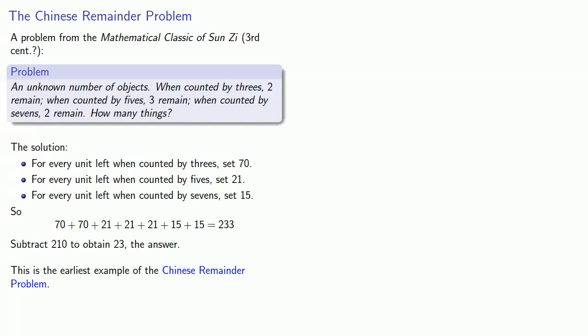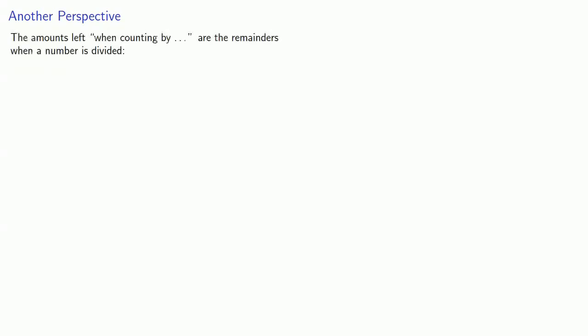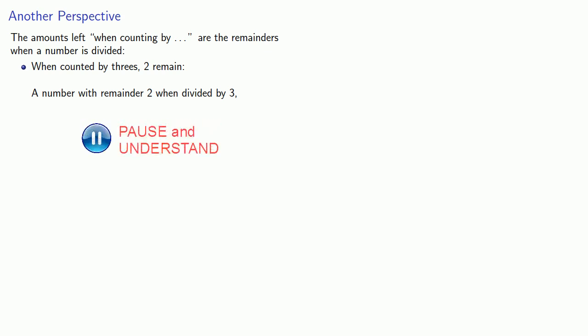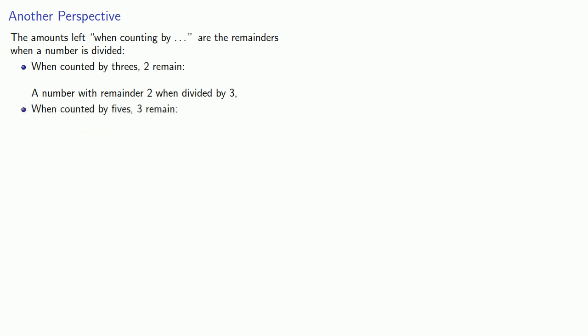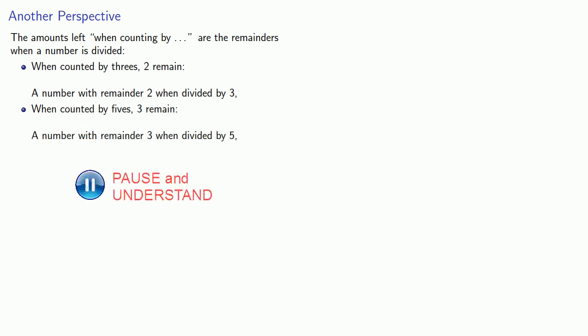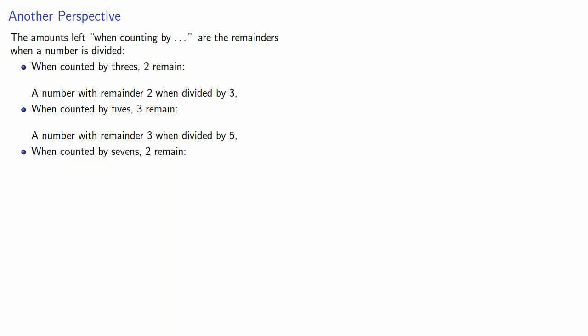This is the earliest example of what's known as the Chinese remainder problem. The amounts left when counting are the remainders when a number is divided. When counted by threes, two remain — that's really saying we have a number with remainder two when divided by three. When counted by fives, three remain — that's a number with remainder three when divided by five. And when counted by sevens, two remain — that's a number with remainder two when divided by seven.